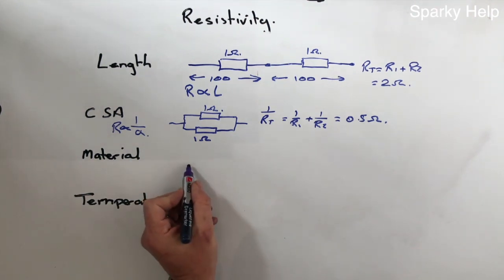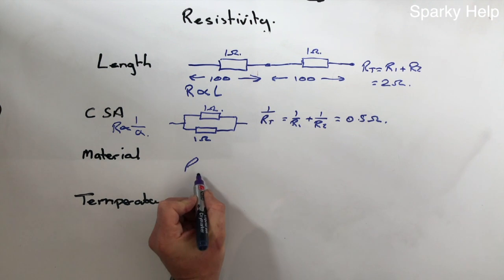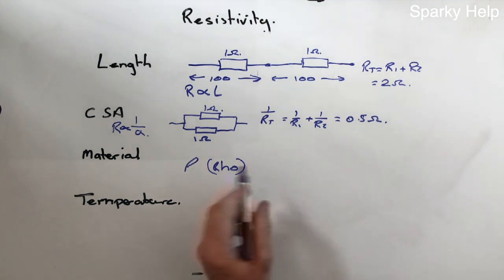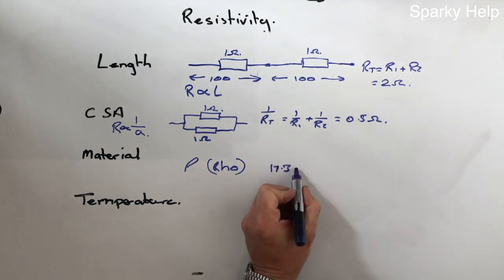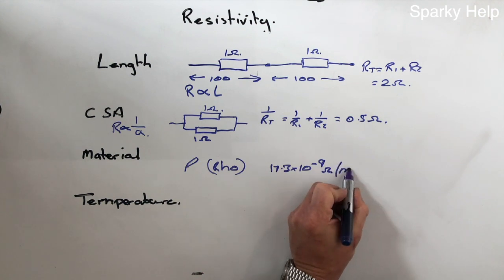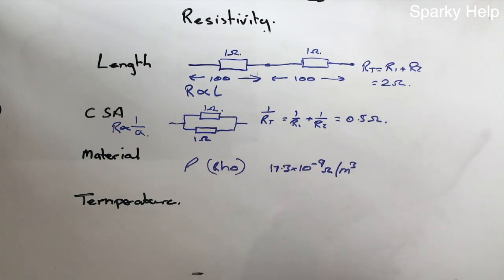So this is based on something called the resistivity, which is rho. For copper, 17.3 times 10 to the minus 9. And this is based on ohms per meter cubed of material.